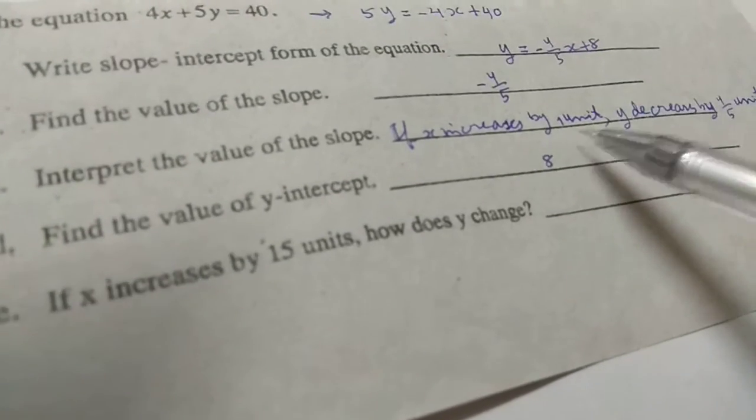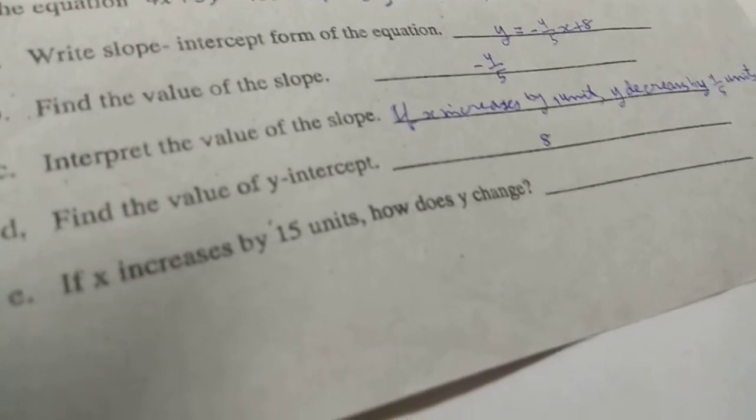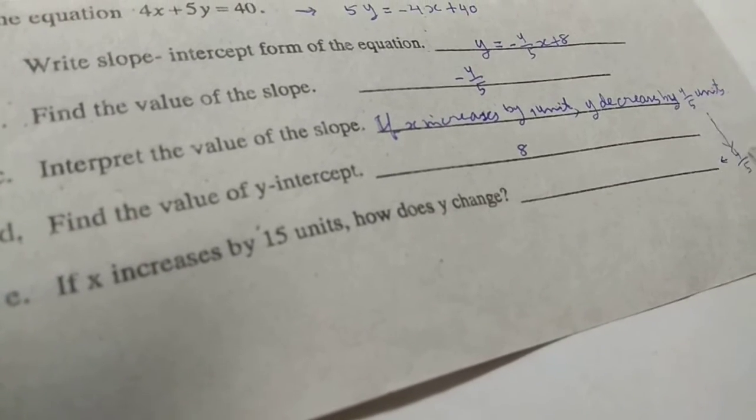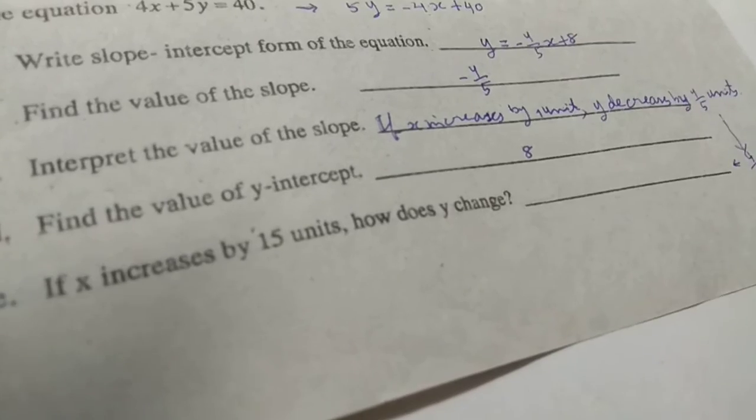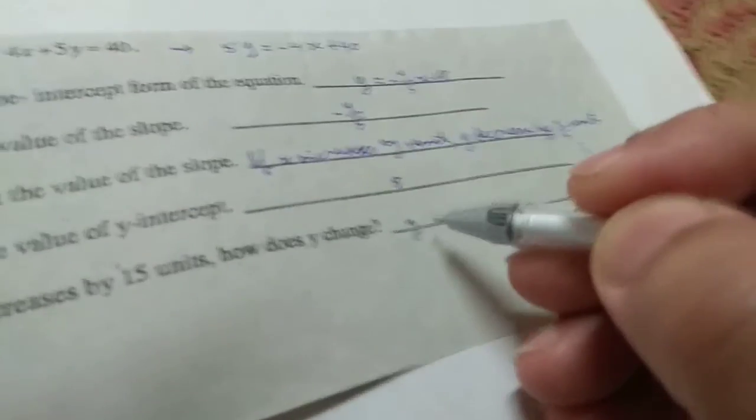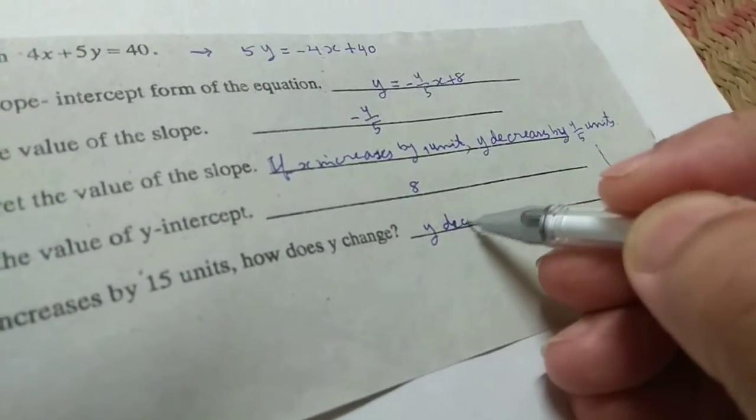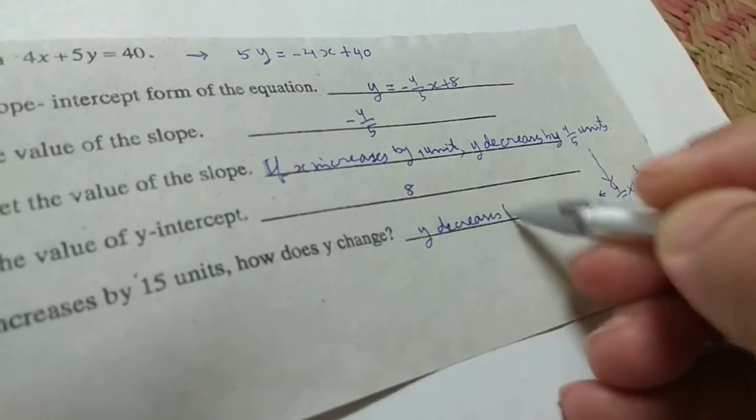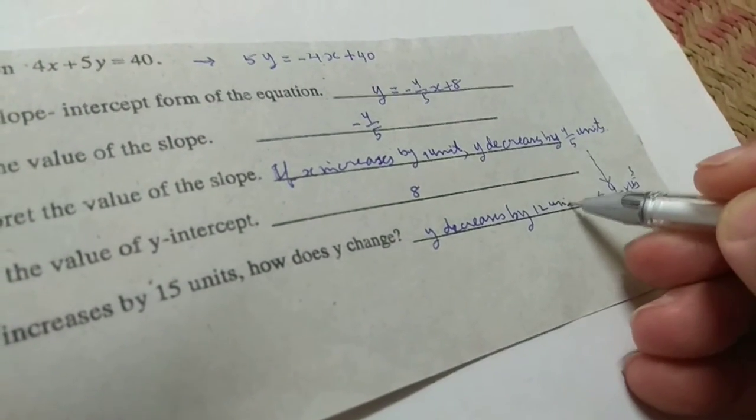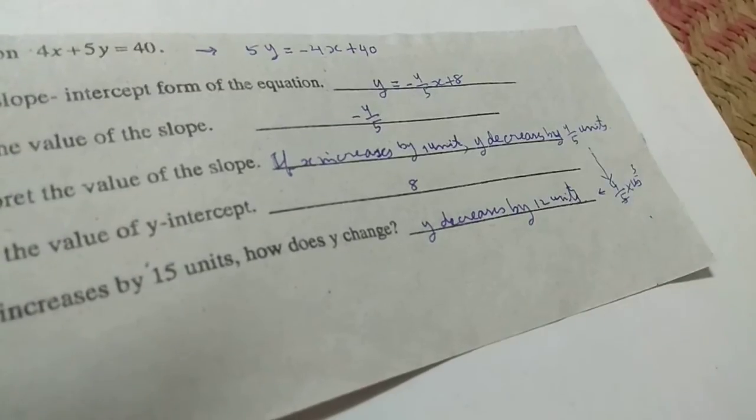15 units, 4/5 times 15. Okay, 15 times 4/5, 12 units. So y decreases by 12 units. So y decreases by 12 units. Thank you.